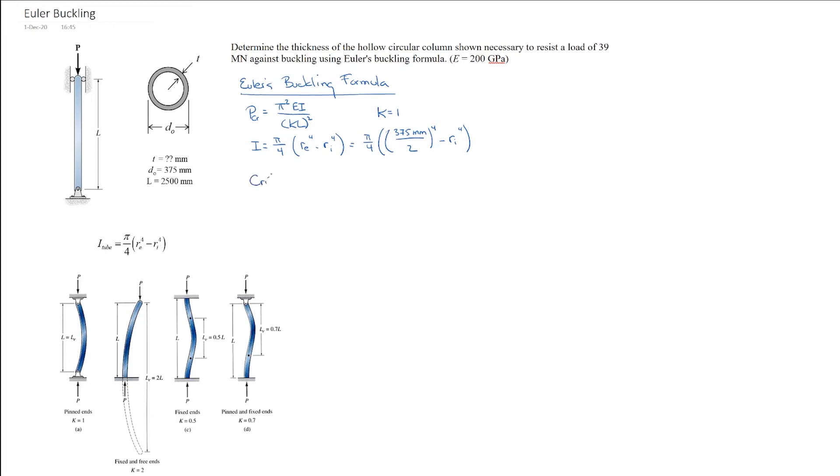So critical load then. P critical, which we have in the problem, is given to us as 39 meganewtons, and to be fair I shouldn't write that out as 39 meganewtons. Let's work in something more reasonable, so I'll put it in in newtons. So I'll multiply by 10⁶, and that would then be equal to π². Our E is 200,000 megapascals or newtons per millimeter squared. So that works here.